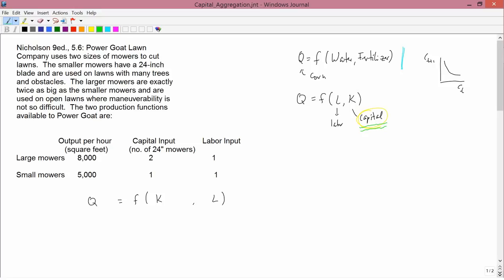And if one wants to write a production function simply as F of L and K, then you need to find some way of combining all those different capital goods into one thing called K.